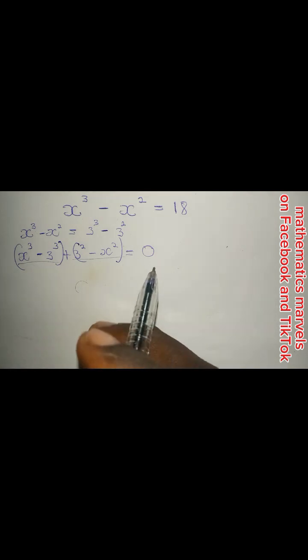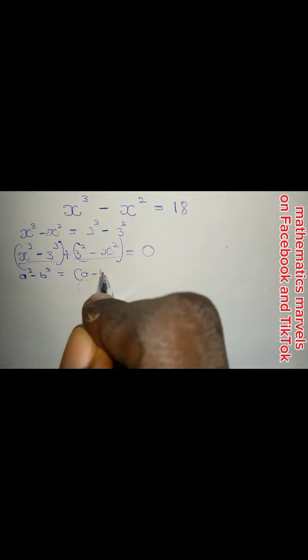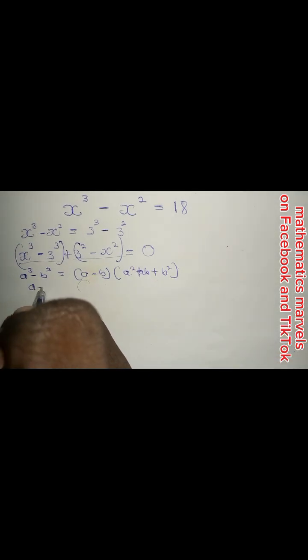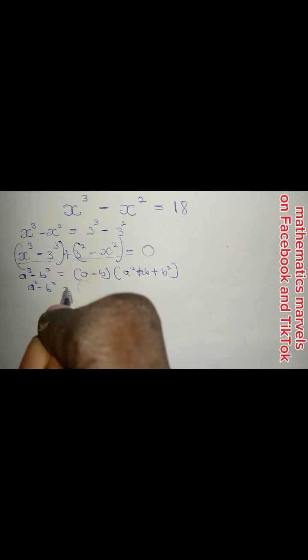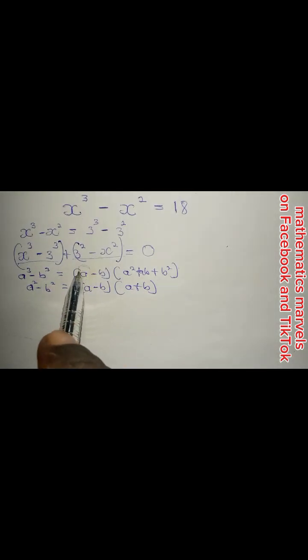Using the property — the difference of cubes product rule — we are going to expand this. Look at it clearly: a raised to the power of 3 minus b raised to the power of 3 is equal to open bracket a minus b, times open bracket a squared plus ab plus b squared. Also, the difference of two squares: a squared minus b squared equals open bracket a minus b, times open bracket a plus b. That's what we are going to use.